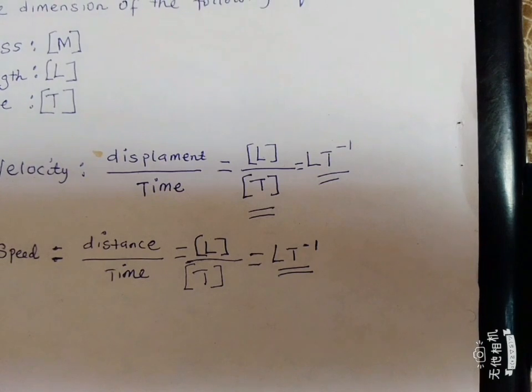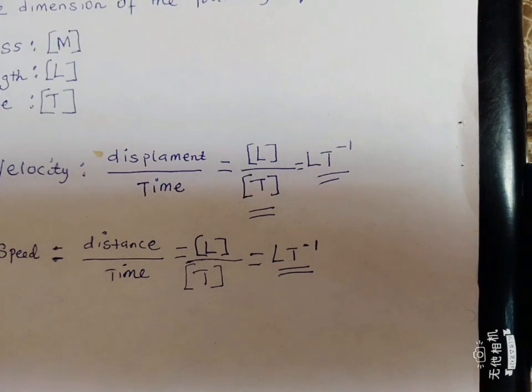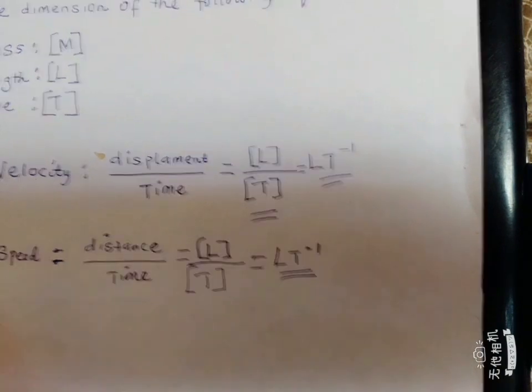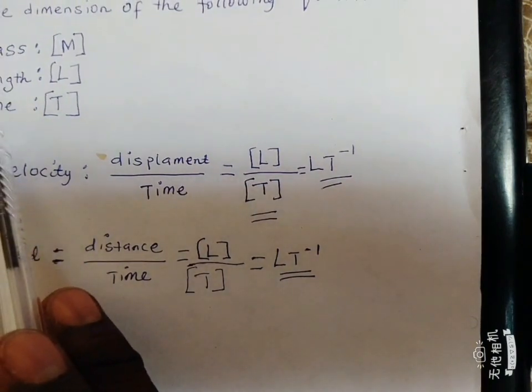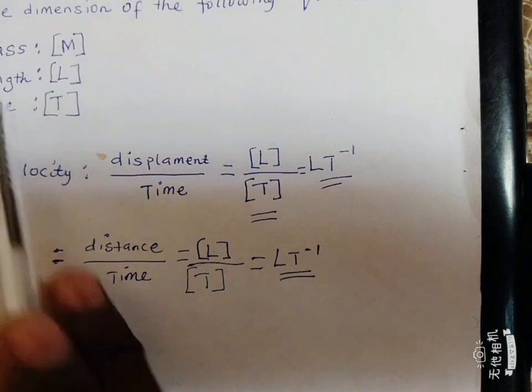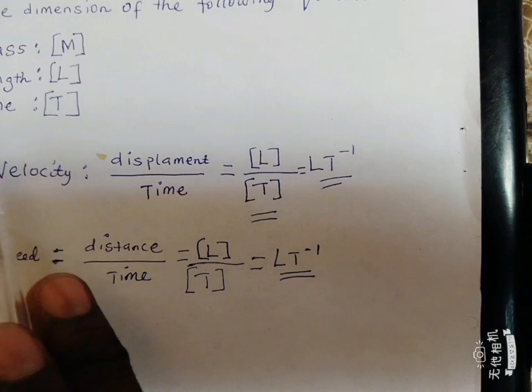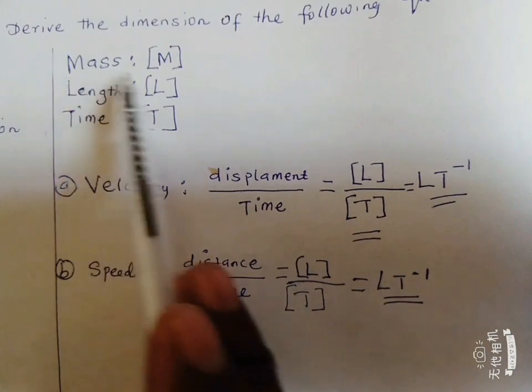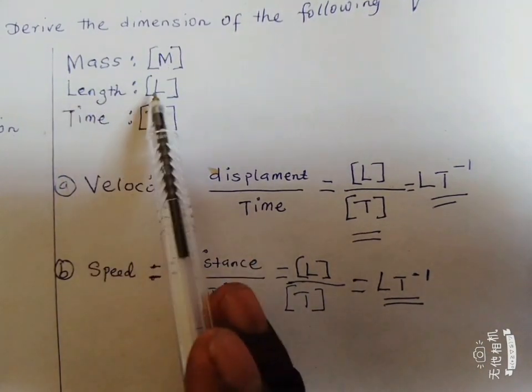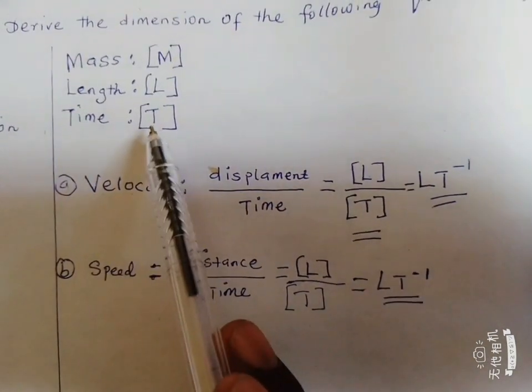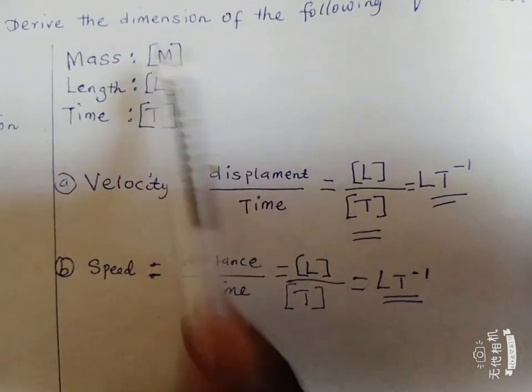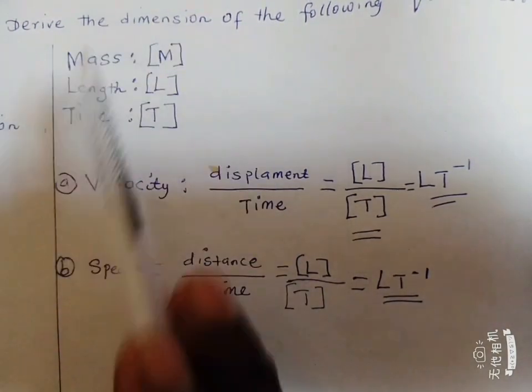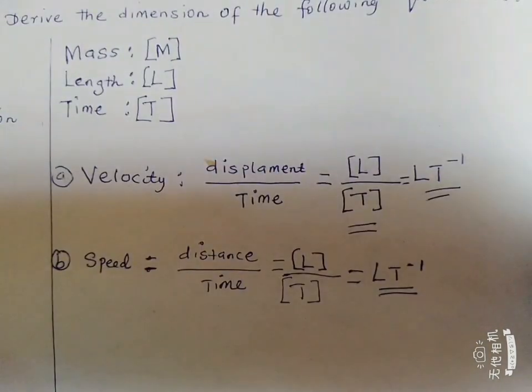Remember, in solving problems in dimensional analysis, we should always try to express these physical quantities using the basic fundamental physical quantities. And it's going to be based on the first letter of each of these fundamental quantities. Like the mass, the first letter in this mass is M. The first letter in this length is L. The first letter in this time is T. So we should always learn to express the dimension of any quantity based on the first letter of these fundamental quantities.